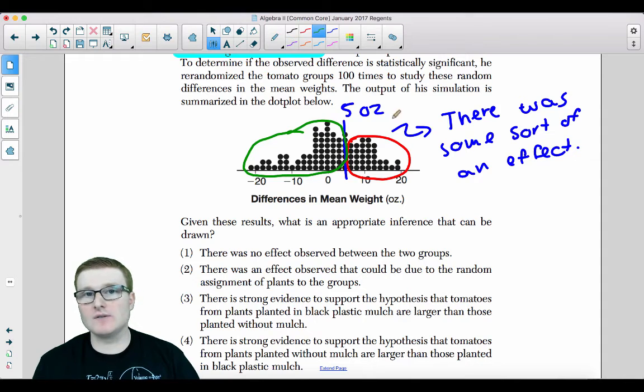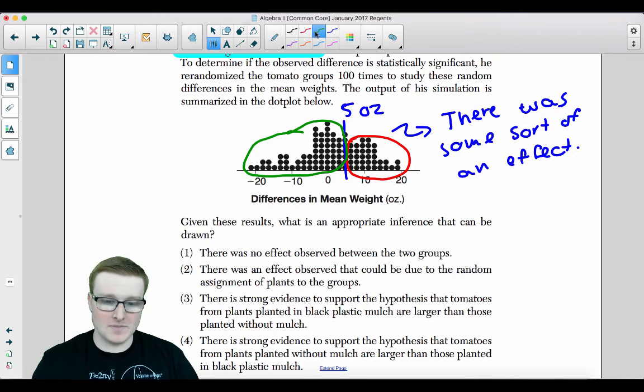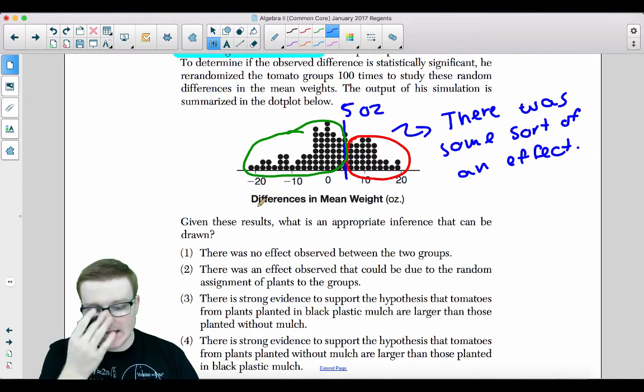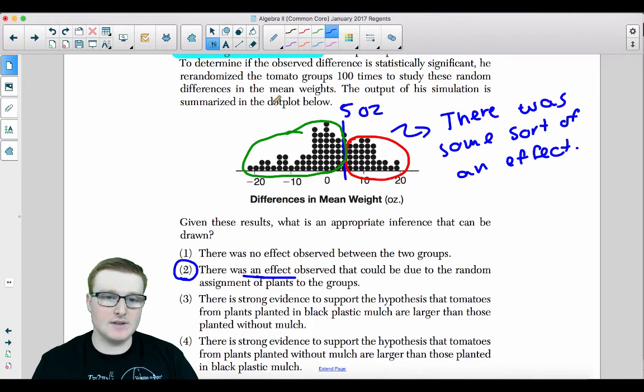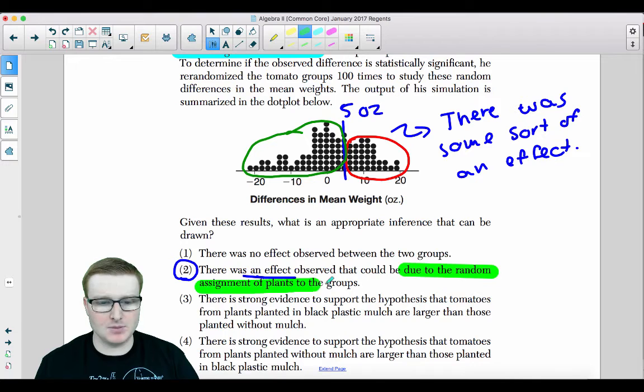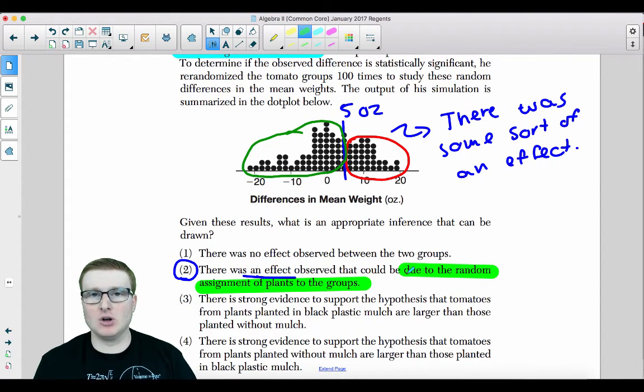So clearly, there was something that took place on the right-hand side. Because if your tomato plants are 10 ounces greater than the average or 20 ounces greater than the average, that is a pretty big statistical significance. So the answer that the answer key indicated was choice two. There was some sort of an effect observed that could be due to the random assignment of plants to the groups. I don't like the end of this. It's not due to the random assignment of plants to the groups. It's due to the fact that they ran the simulation multiple times, and it just so happened that the black plastic mulch has some sort of an effect on the growth of plants. I don't know why they put due to the random assignment. I don't like that answer, but the answer is choice two. I think whoever wrote that question was not thinking that day.